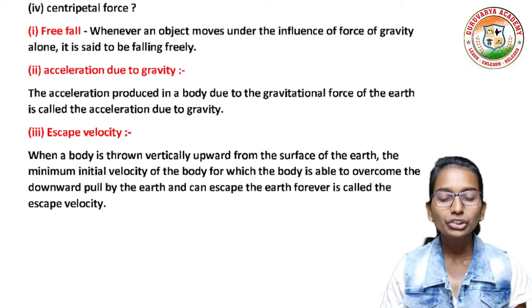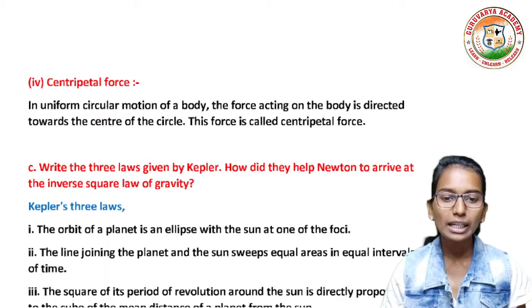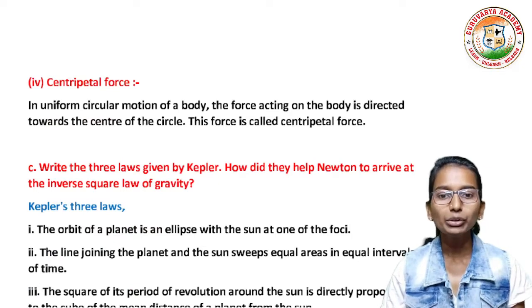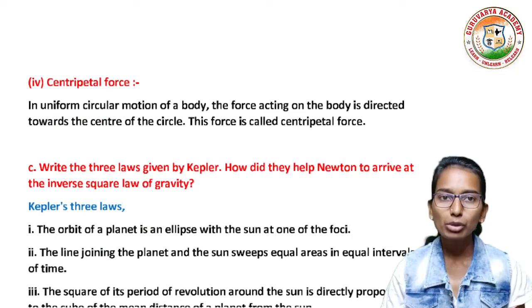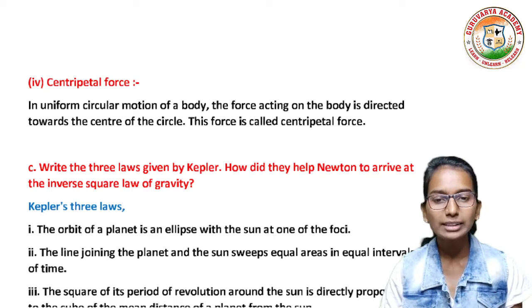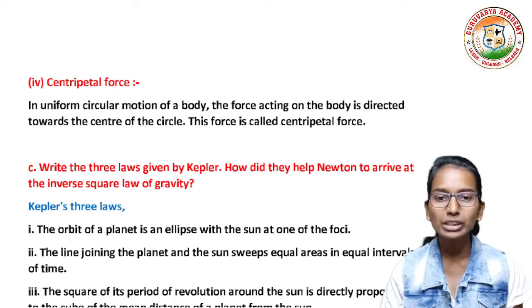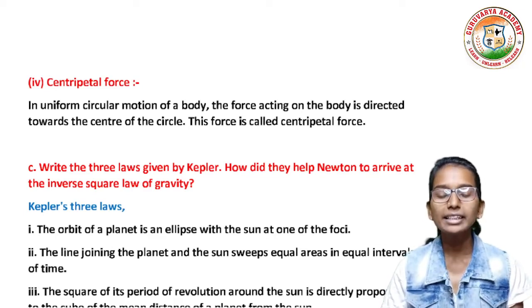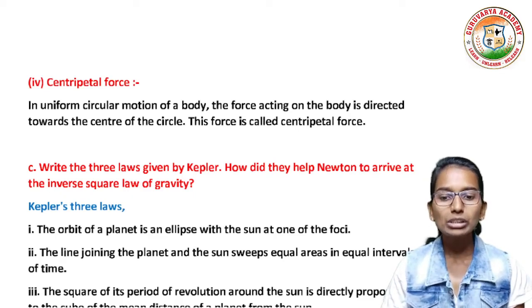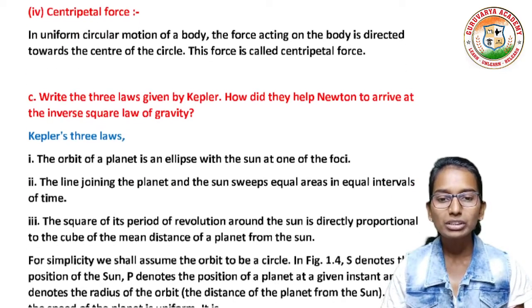Third, escape velocity: when a body is thrown vertically upward from the surface of earth, the minimum initial velocity for which the body is able to overcome the downward pull by the earth and escape forever is called the escape velocity. Fourth, centripetal force: in uniform circular motion, the force acting on the body directed towards the centre of the circle is called centripetal force.